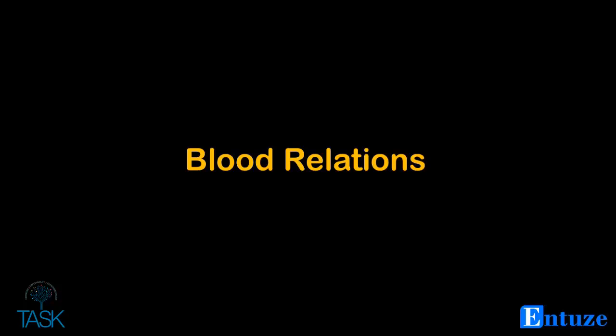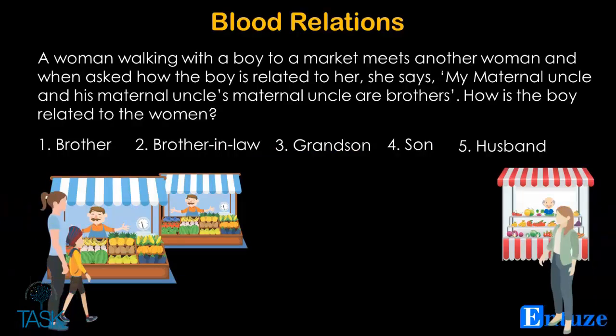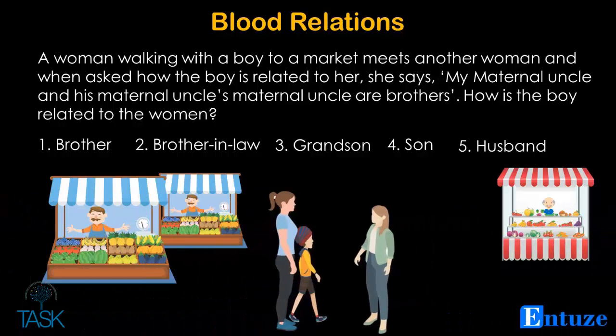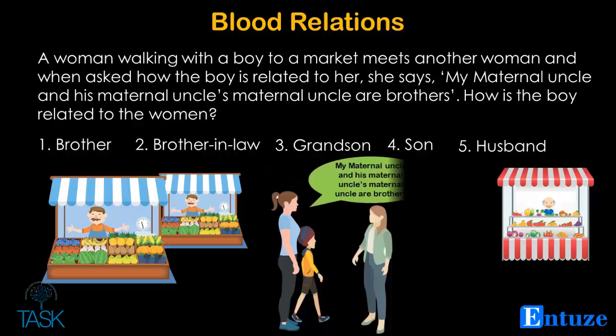Let us solve a blood relation problem. A woman walking with a boy to a market meets another woman and when asked how the boy is related to her, she says: My maternal uncle and his maternal uncle's maternal uncle are brothers. How is this boy related to the woman?